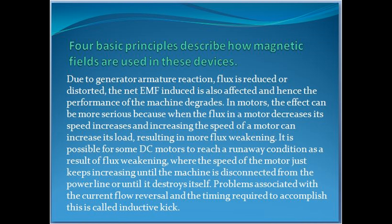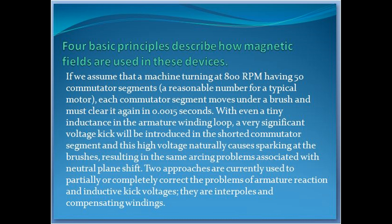Due to generator armature reaction, flux is reduced or distorted, and the net EMF induced is also affected, hence the performance of the machine degrades. In motors, the effect can be more serious: when the flux in a motor decreases, its speed increases, and increasing the speed of a motor can increase its load, resulting in more flux weakening. It is possible for some DC motors to reach a runaway condition as a result of flux weakening, where the speed of the motor just keeps increasing until the machine is disconnected from the power line or destroys itself. Problems associated with the current flow reversal and the timing required to accomplish this is called inductive kick. If a machine turning at 800 rpm has 50 commutator segments, each commutator segment moves under a brush and must clear it again in 0.0015 seconds. With even a tiny inductance in the armature winding loop, a very significant voltage kick will be introduced in the shorted commutator segment, and this high voltage naturally causes sparking at the brushes, resulting in the same arcing problems associated with neutral plane shift.